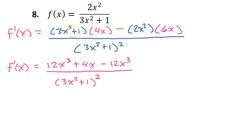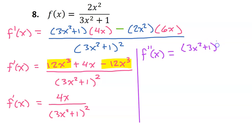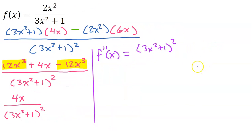After distributing and combining like terms, the 12x squared terms cancel each other out, giving us the simplified first derivative. Now it's time to find the second derivative, and it looks like we will need the quotient rule again — double quotient rule. So low d high: write down the bottom part, 3x squared plus 1 squared, times d high, the derivative of the top, which is just 4.